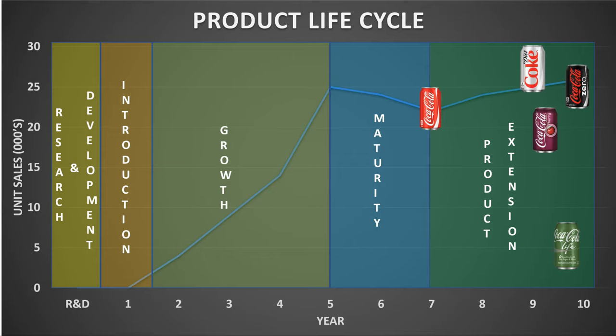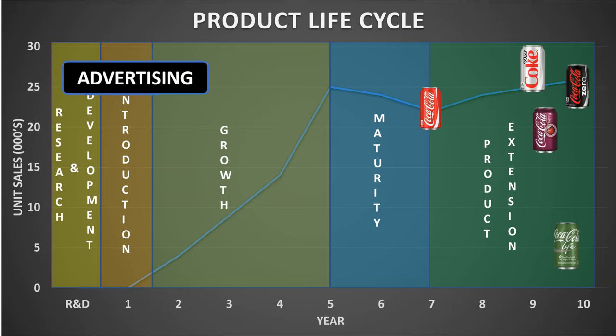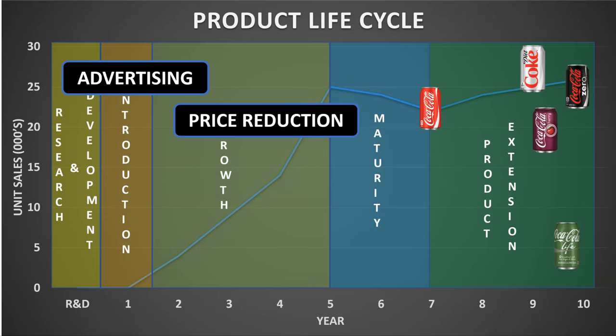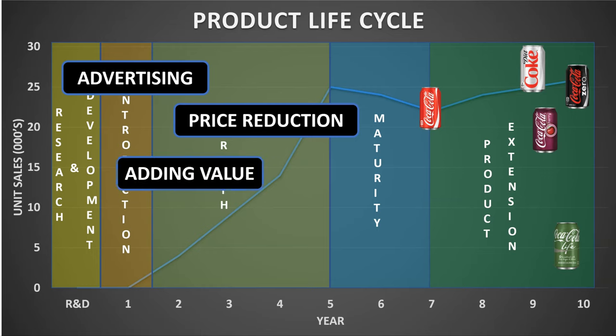Other examples of common extension strategies include advertising, with the aim of gaining a new audience or reminding the current audience of the product. You've then got price reduction, to make the product more attractive to customers, and adding value to the product, such as adding new features — for example, improving the specifications on a smartphone.